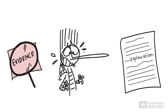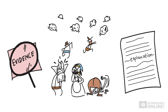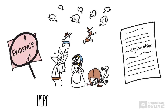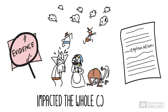We could even add another example afterwards, talking about the consequences for the community and not just the boy. After the boy is eaten, the flock scatters and the villagers lose all their sheep. The boy's lying has negatively impacted the whole community.